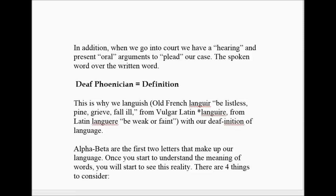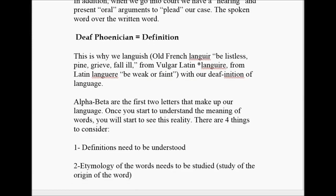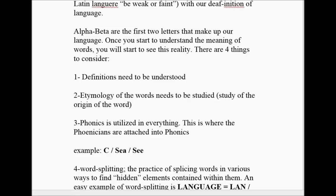We can go into court. We have a hearing and present oral arguments to plead our case — the spoken word over the written word. That's why it's Phoenician, or definition. This is why we languish — Old French 'languere,' to be listless, pine, grieve, fall ill. From Vulgar Latin 'languere,' from Latin 'linguere,' to be faint or weak — with our definition of language. Alpha, beta are the first two letters that make up our language. Once you understand the meaning of words, you will start to see this reality. There are four things to consider.